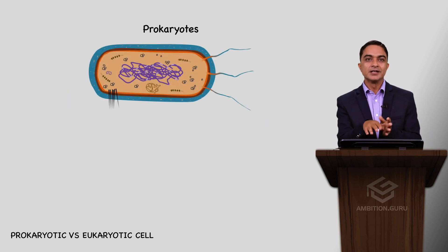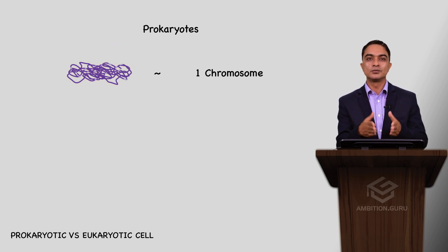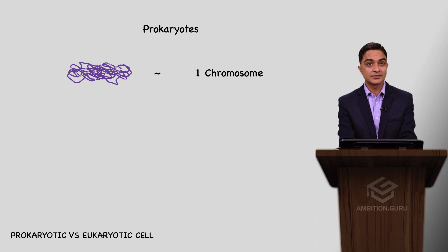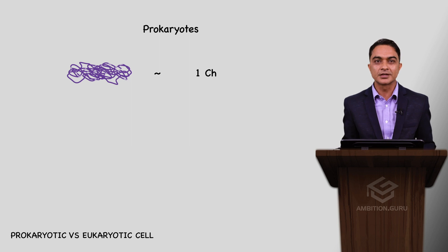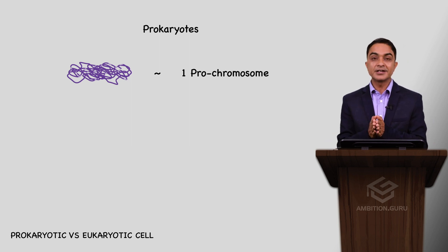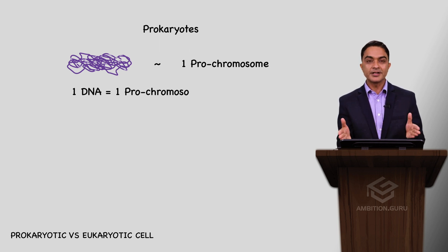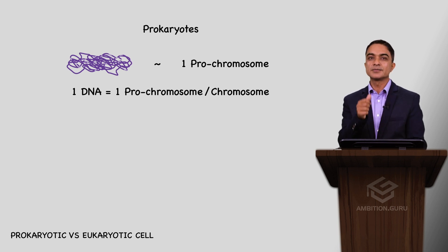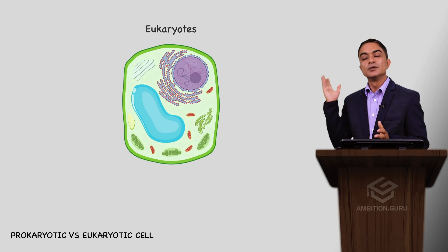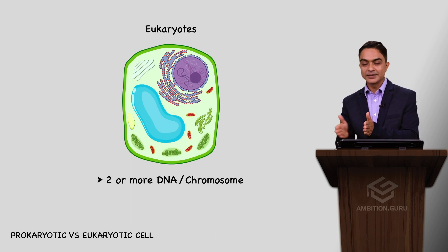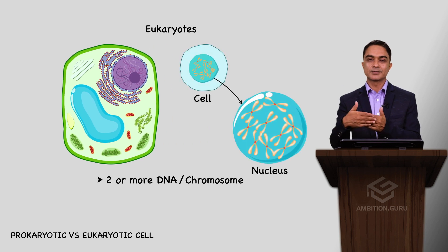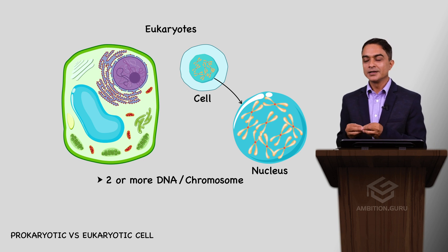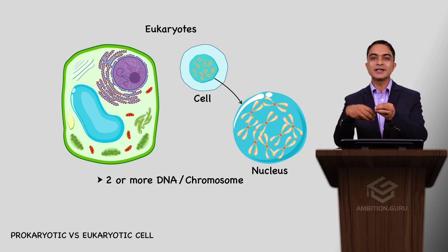In prokaryotes, the nucleoid is equivalent to one chromosome. The chromosome in prokaryotes is sometimes called a prokromosome — it is essentially the DNA itself. In eukaryotes, there are many chromosomes and correspondingly many DNA molecules in the nucleus. Regarding cell size: prokaryotic cells are generally small, ranging from 0.1 to 0.5 micrometers, while eukaryotic cells are generally large, ranging from 5 to 100 micrometers.